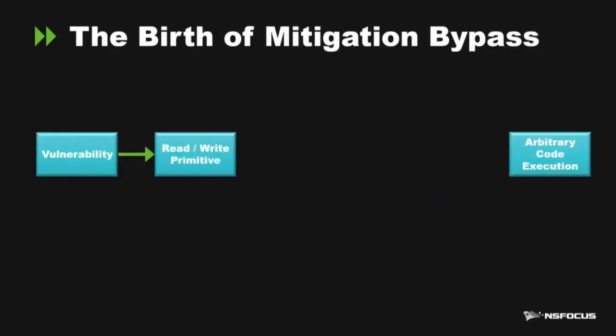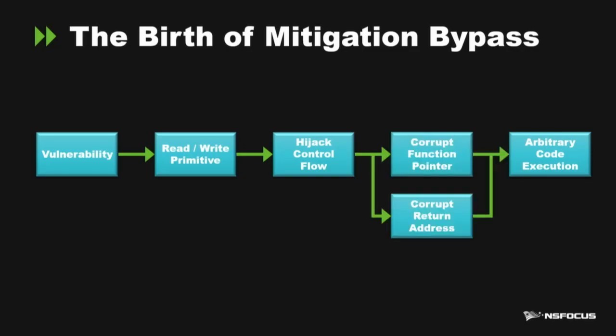There are many ways to achieve mitigation bypass, but the most popular approach was first to get read-write primitives from the vulnerability, and then use that read-write capability to hijack control flow — for example, by corrupting a function pointer or corrupting a return address on the stack — both can lead to arbitrary code execution. This is the very classical mitigation bypass technique, and it has been used for many years.